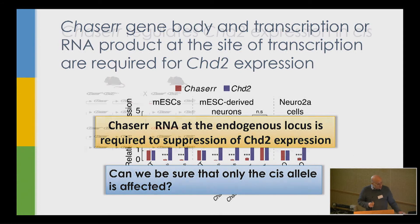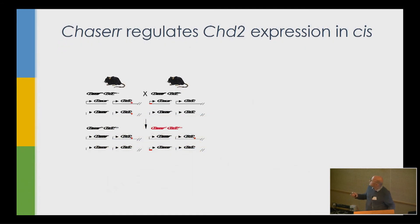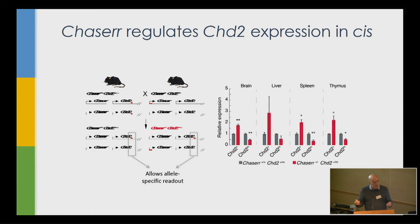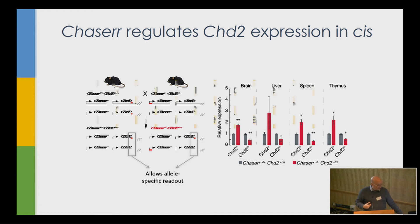To show this really acts in cis, we also generated a knockout for CHD2 itself using a single guide RNA — these mice are viable and fertile. We crossed mice homozygous for CHD2 knockout with our heterozygous Chaser knockouts, and used allele-specific PCR to see which allele is affected. Consistently across various tissues, we're specifically affecting expression of the CHD2 allele on the same chromosome where Chaser is missing. On the other chromosome, we actually see some repression.